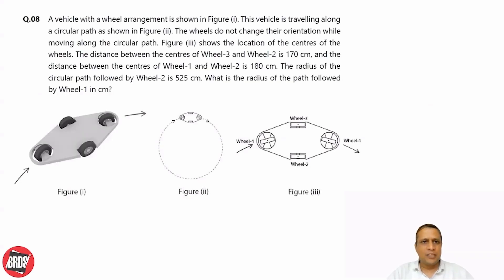A vehicle with a wheel arrangement is shown in the figure. This is the vehicle given. The vehicle is traveling along a circular path as shown. The wheels do not change their orientation while moving along the circular path, so their orientation remains the same. Figure 3 shows the location of the center of the wheels. These four centers are shown.